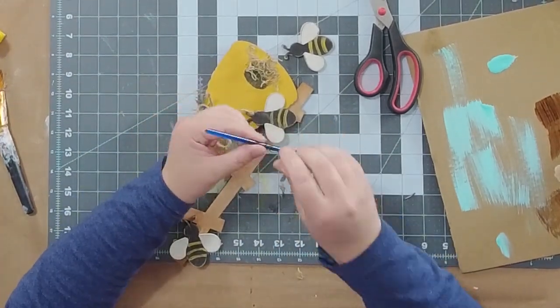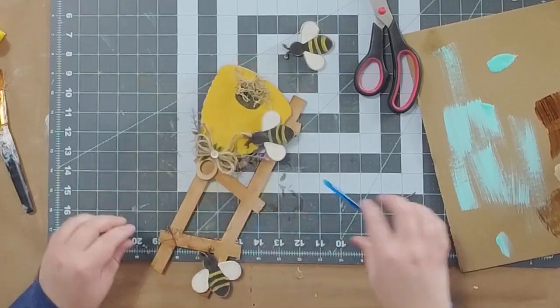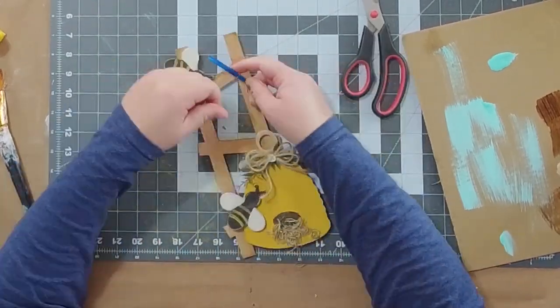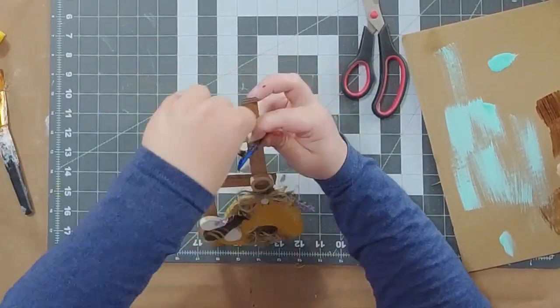Then the third bee, we're going to add this wire. I found the easiest way to do it is wrap it around the top of the ladder and then wrap it around the top of the bee's neck, and then twist the middle.